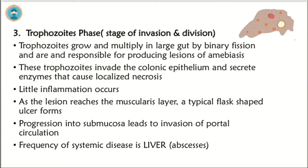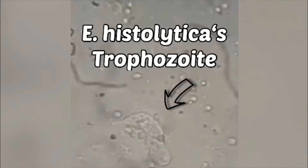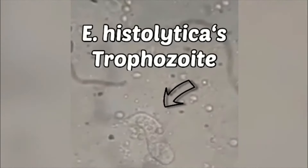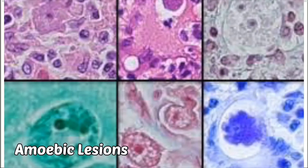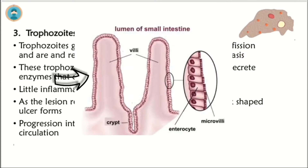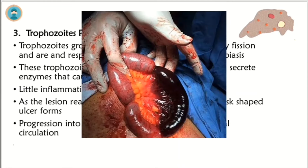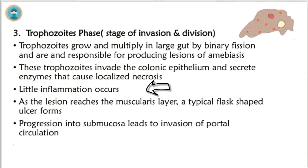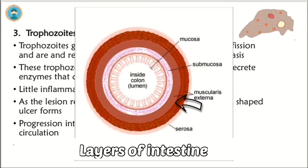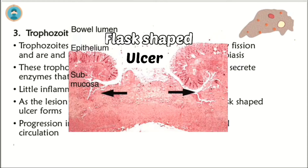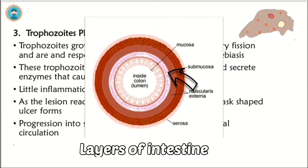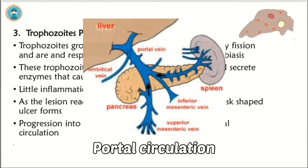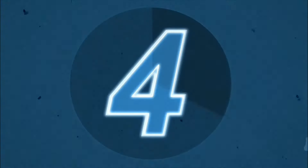Step 3 is the trophozoite phase, also called the stage of invasion and division. Trophozoites grow and multiply in the gut by binary fission and are responsible for producing lesions of amoebiasis. These trophozoites invade the colonic epithelium and secrete enzymes that cause localized necrosis, with little inflammation. As the lesion reaches the muscularis layer, a typical flask-shaped ulcer is formed. Progression into the submucosa leads to invasion of the portal circulation.